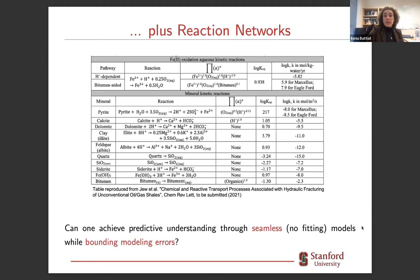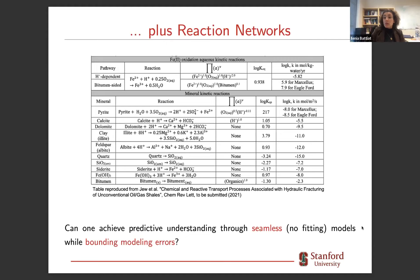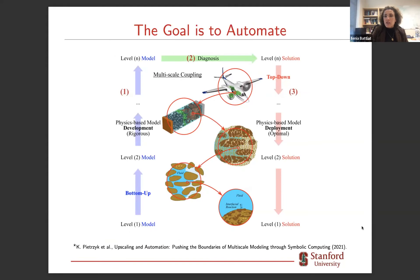The challenge we undertook became: can we really achieve predictive understanding through seamless multi-scale modeling while bounding modeling errors, but for systems of realistic complexity? We started looking in a different direction than the fashionable data-driven models — we started looking at automation through symbolic computing. We thought that the bottleneck of integrating these rigorous strategies into realistic applications — where models are still quite primitive and don't match what we develop in academia — could be addressed by software that does the math.